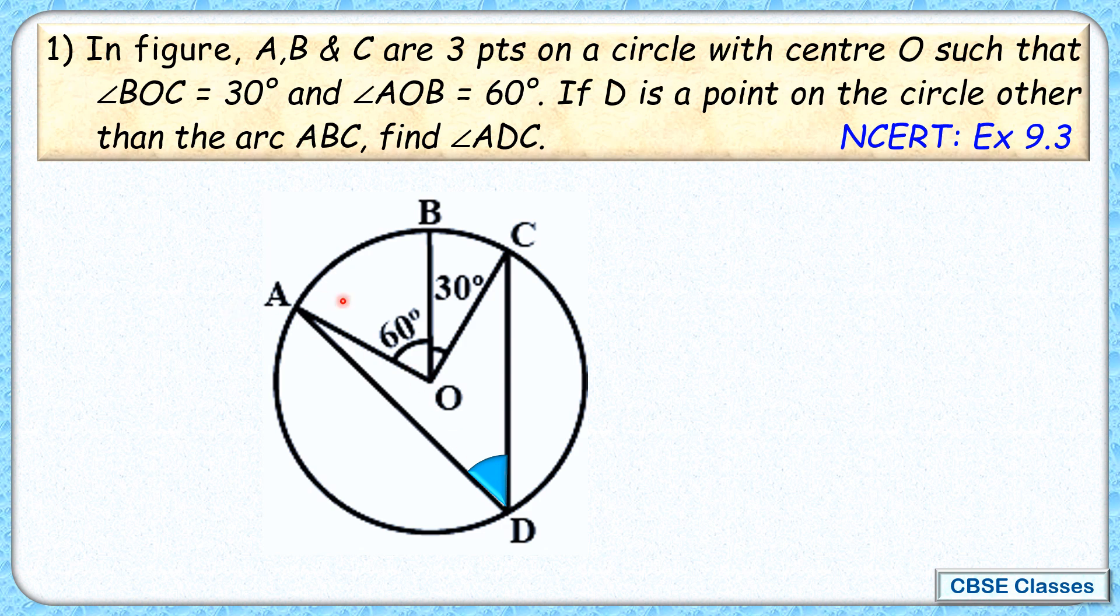Let's check the solution. Here we can see the arc ABC. It's subtending an angle of 60 plus 30 or 90 degrees at the center. And by inscribed angle theorem,